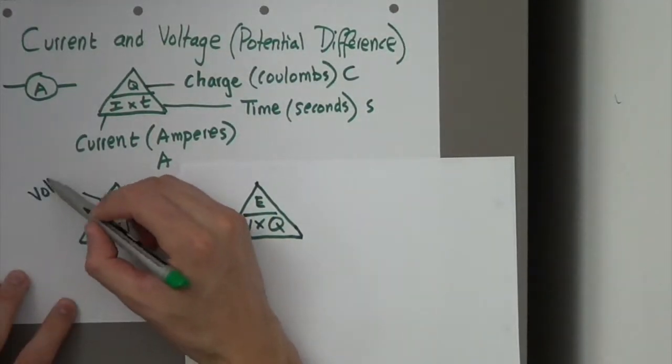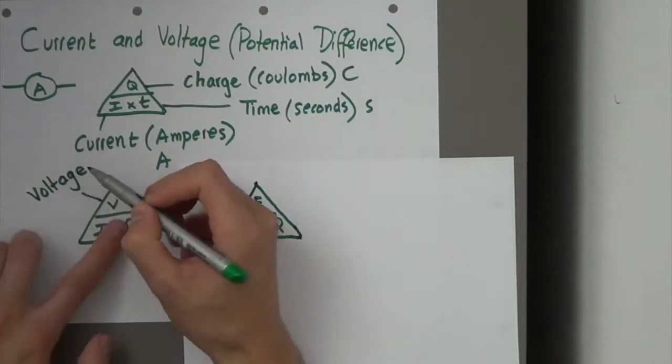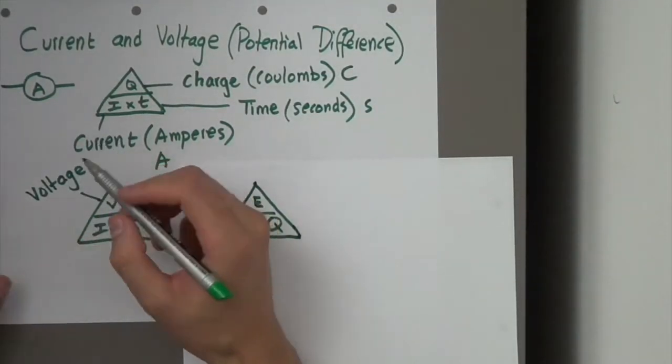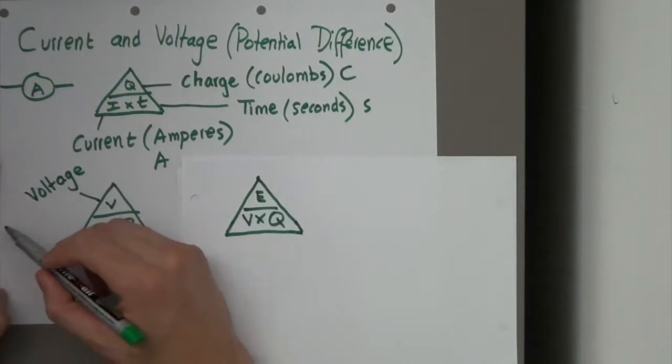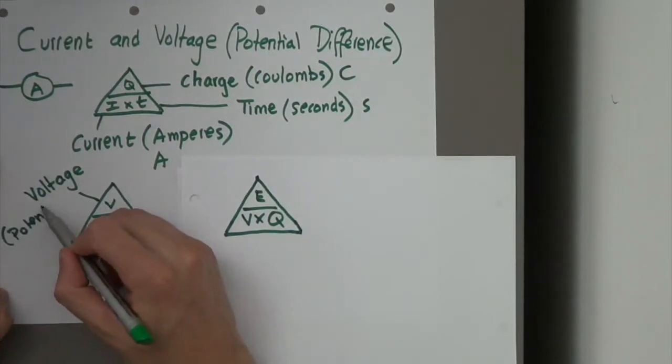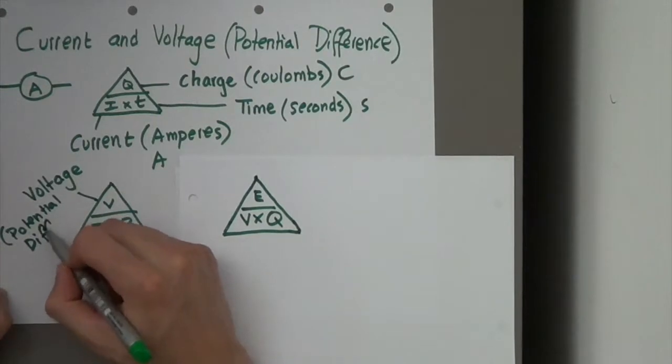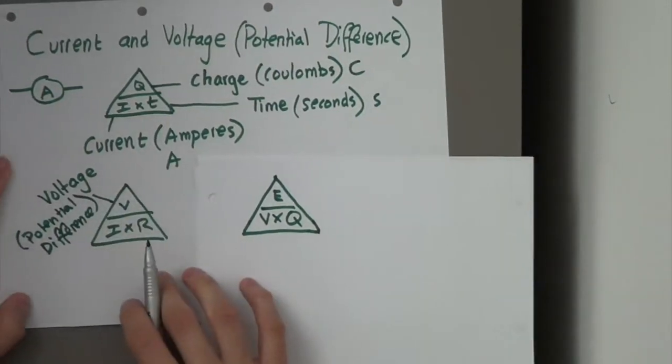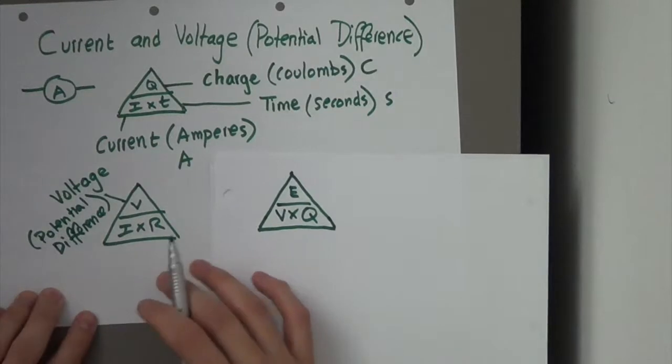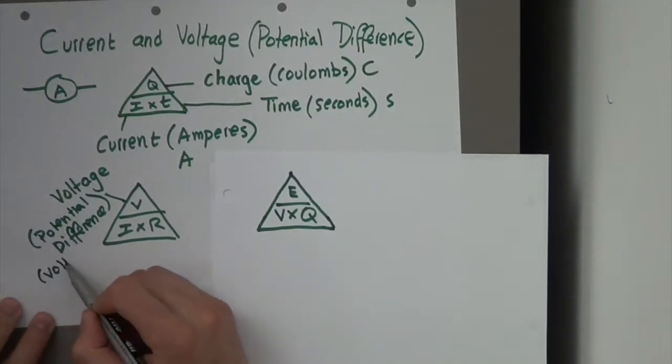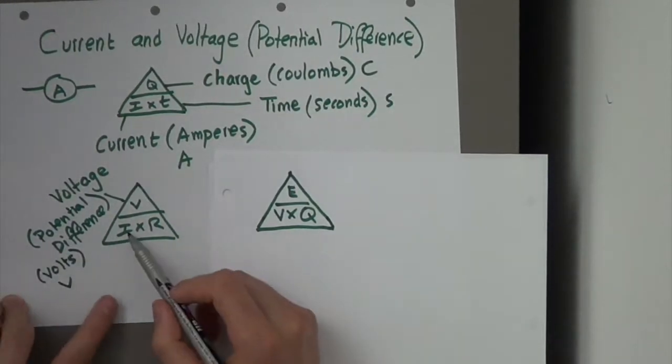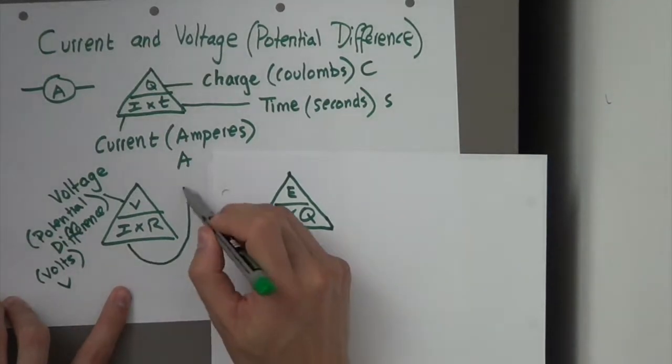So, V is voltage. That's a nice straightforward one, V, V, and remember voltage can be also a potential difference. And its units are volts, denoted by V. Current, we already know.